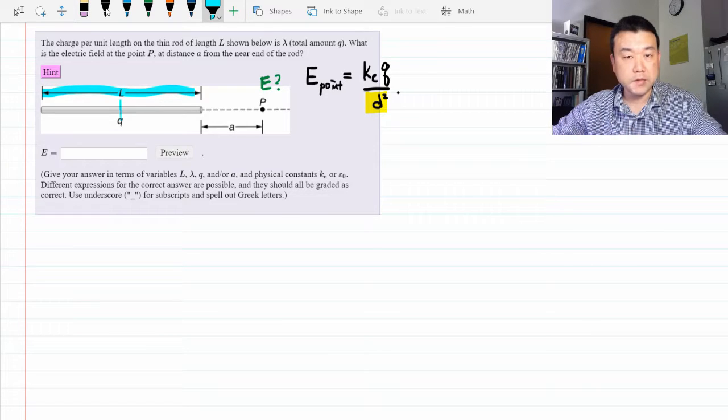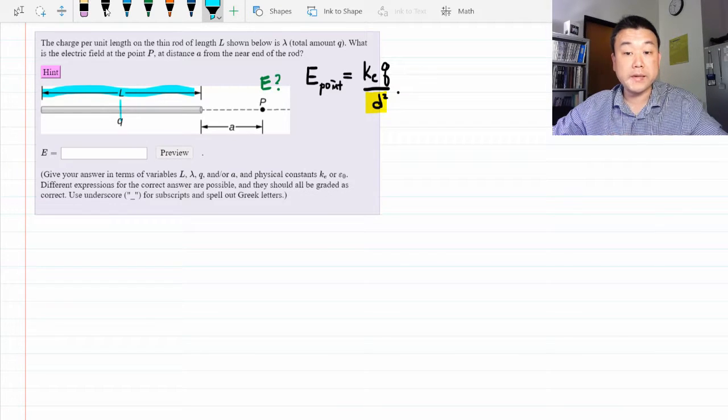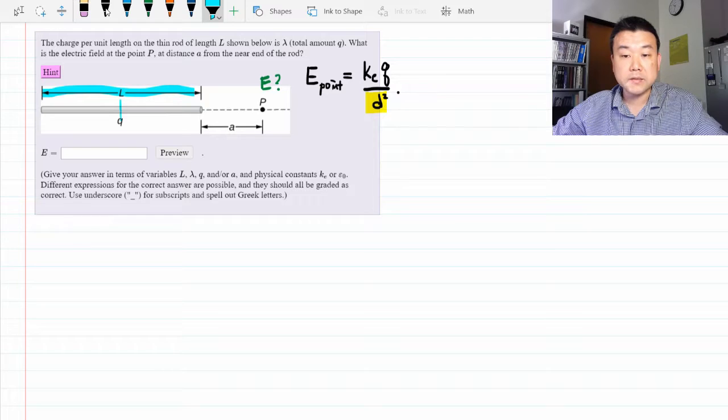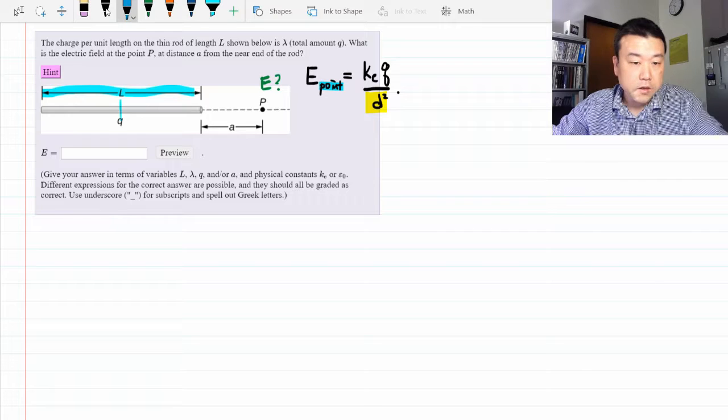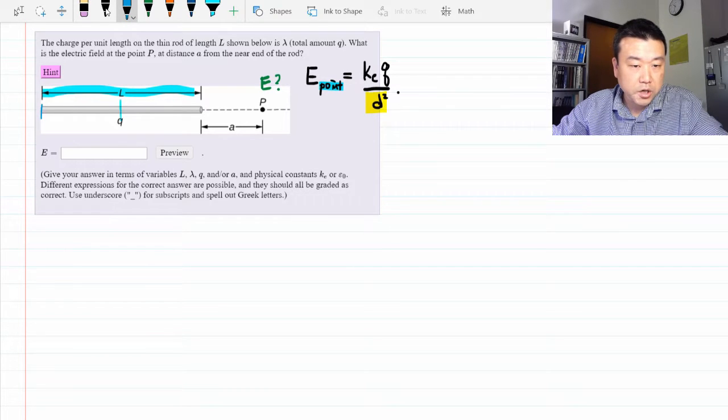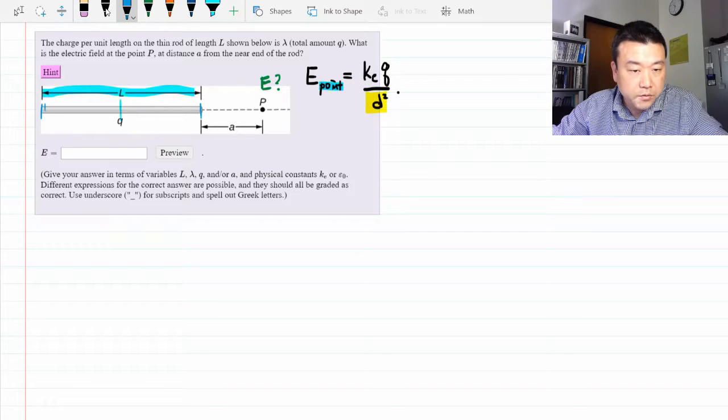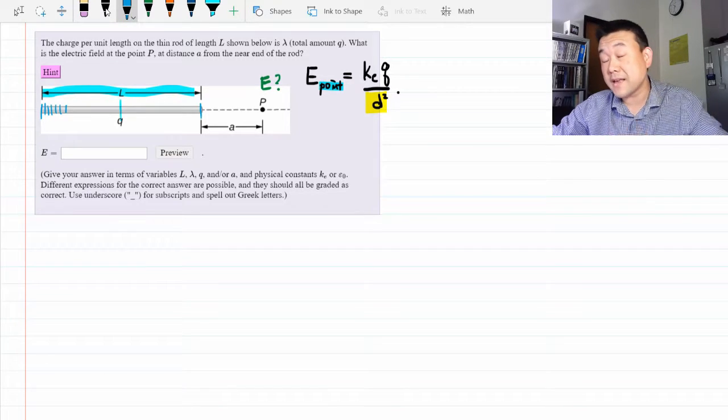What we do is we break up the setup to the point where we can apply this equation that is meant for a point charge. So this is what we are going to do. We are going to take this entire charge distribution and imagine breaking it up into tiny little pieces, in fact, into infinitesimal pieces.